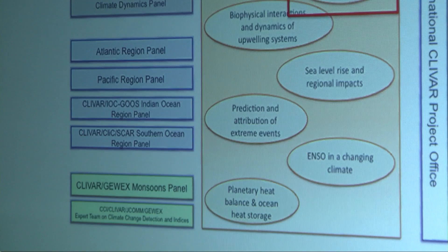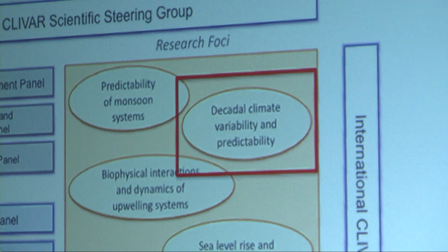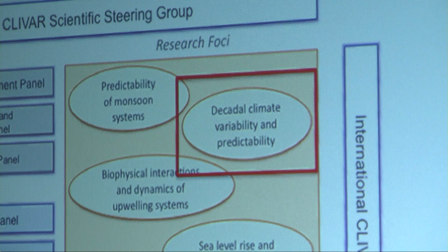CLIVAR decided to have cross-cutting activities defined as research foresight, and those cut across the panels. It's like a matrix-type arrangement, which is really important because decadal variability — which we are trying to represent here from both sides of CLIVAR and WCRP — is an activity that cuts across the different panels, because it deals with the effect of the Atlantic, the effect of the Pacific, the dynamics, and all these things. That's the reason why CLIVAR decided to have these cross-cutting activities.